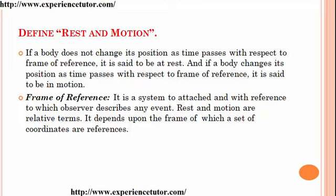Define rest and motion. If a body does not change its position as time passes with respect to a frame of reference, it is said to be at rest. If a body changes its position as time passes with respect to a frame of reference, it is said to be in motion. A frame of reference is a system attached to and with reference to which an observer describes an event. Rest and motion are relative terms; they depend upon the frame of reference.